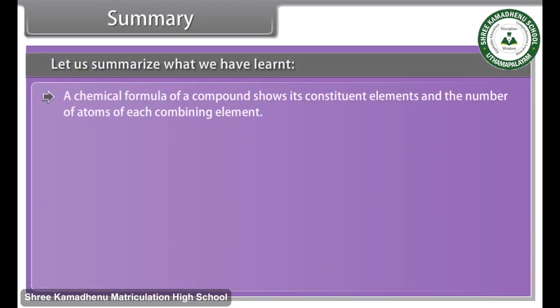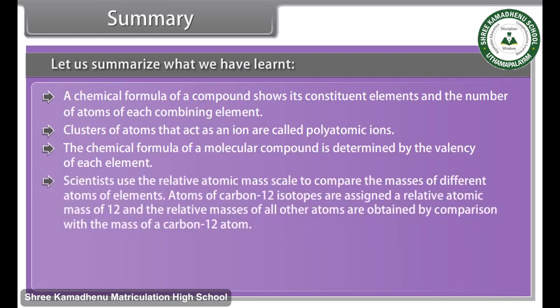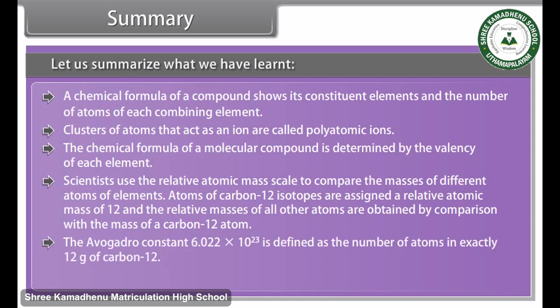Summary: A chemical formula of a compound shows its constituent elements and the number of atoms of each combining element. Clusters of atoms that act as an ion are called polyatomic ions. The chemical formula of a molecular compound is determined by the valency of each element. Scientists use the relative atomic mass scale to compare the masses of different atoms. Atoms of carbon-12 isotopes are assigned a relative atomic mass of 12, and the relative masses of all other atoms are obtained by comparison with the mass of a carbon-12 atom. The Avogadro constant, 6.022 × 10²³, is defined as the number of atoms in exactly 12 grams of carbon-12. The mass of one mole of a substance is called its molar mass.